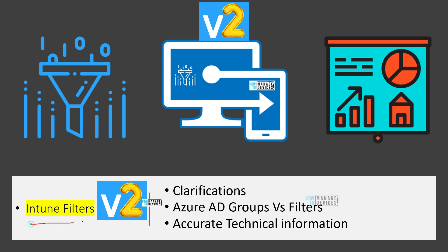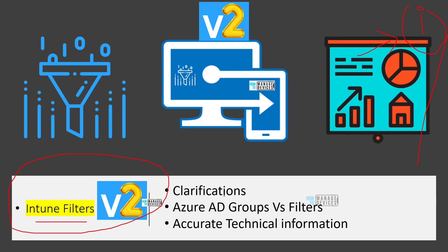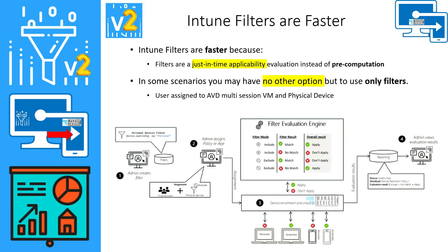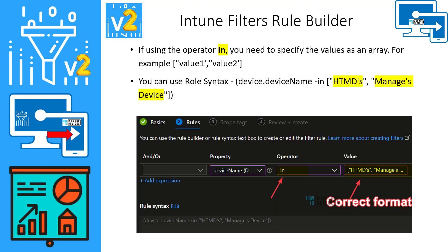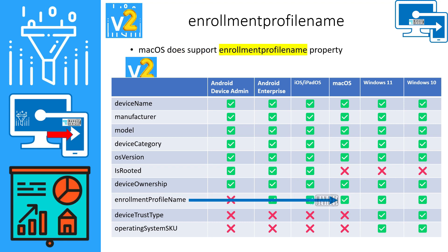We have two videos about Intune filters and filter rules, so I'm not going to cover everything in this slide. I will directly go into the demo after quickly going through it. You can get all the details from YouTube by clicking the 'i' button on the right side of the video — that gives you the Intune design decisions playlist and Intune training playlist where filter details are covered.